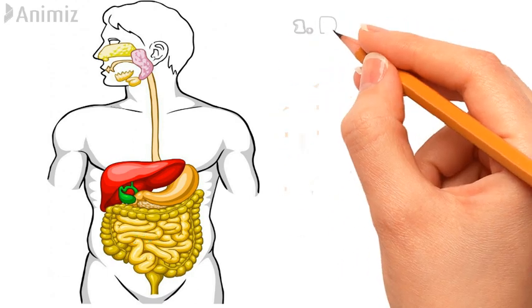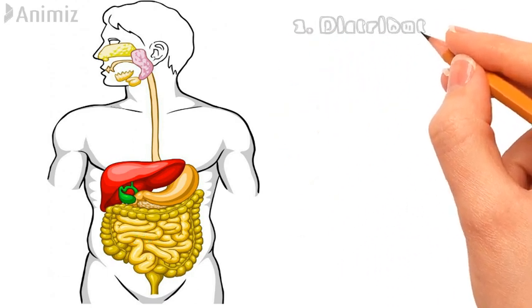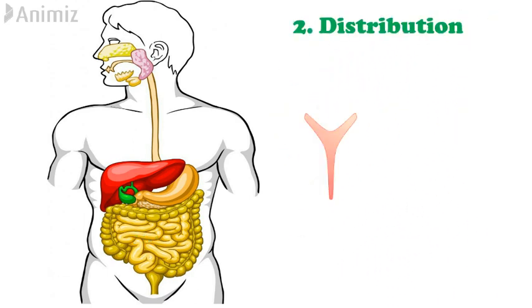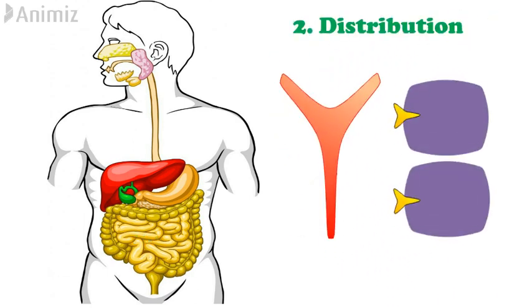The second step is the distribution of drug. It means the movement of drug from the blood vessel to the extracellular fluid or the interstitial space, where it finally binds to its specific receptor on the cell and shows its pharmacological response.